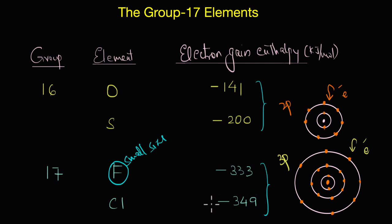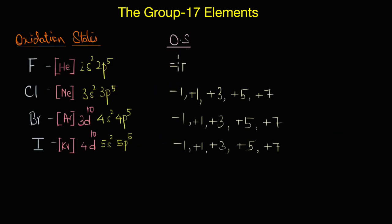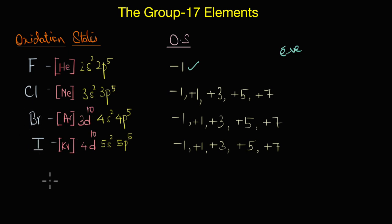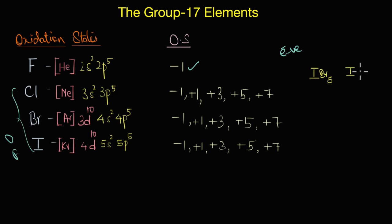Coming to oxidation states, all halogens exhibit a -1 oxidation state. However, except fluorine, all other halogens also exhibit positive oxidation states. The logic is that if these electronegative halogens have to exhibit a positive oxidation state, they have to give away their electrons, which means they have to combine with an element that is more electronegative than themselves. This is why chlorine, bromine, and iodine usually exhibit positive oxidation states when they combine with smaller, highly electronegative elements like oxygen or fluorine.